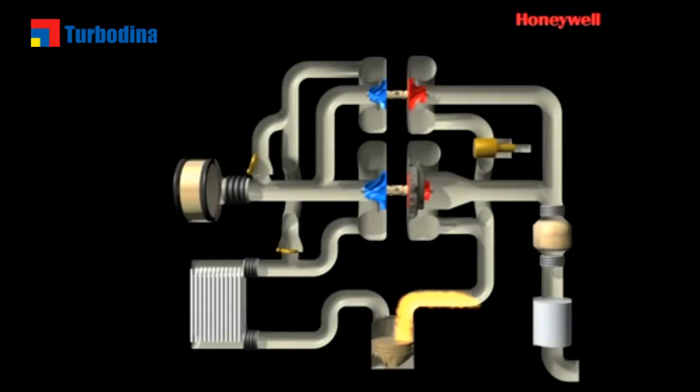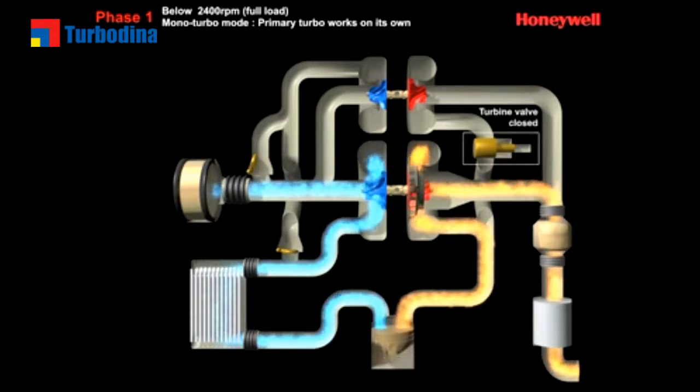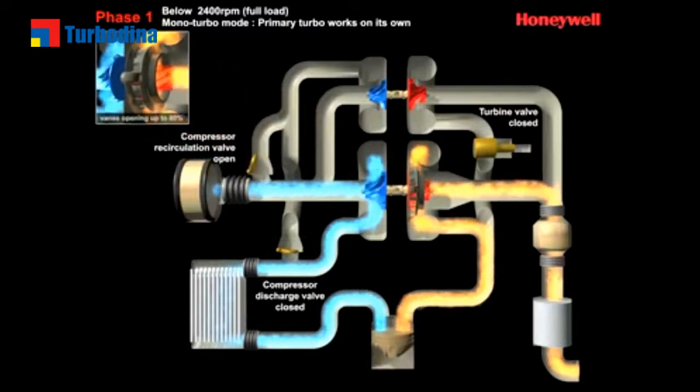In this example at engine startup, and all the while below 2400 RPM, the VNT Turbo works on its own, drawing in, compressing and cooling ambient air before it enters the combustion process. The result is cleaner, more efficient combustion, which enhances low-end torque, optimizes drivability and helps improve fuel efficiency and emissions reduction. In this mono-turbo mode,